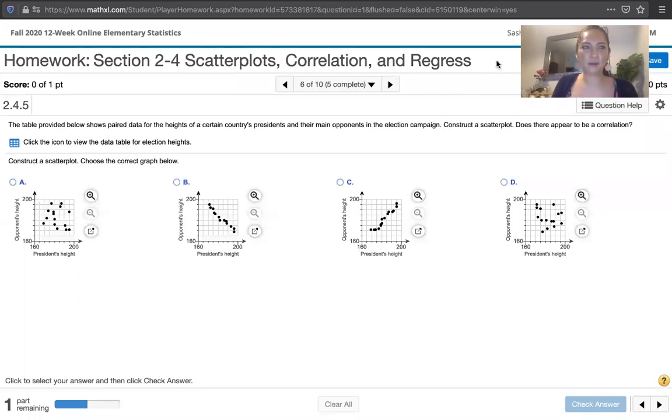In this video, we solve homework problem 2.4.5 from the Essentials of Statistics text, 6th edition by Mario Triola. The problem statement says: the table provided below shows paired data for the heights of a certain country's presidents and their main opponents in the election campaign. Construct a scatter plot. Does there appear to be a correlation?